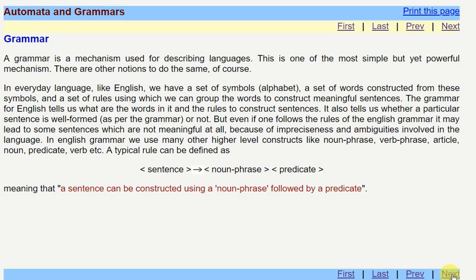There can be constructs like noun phrase, verb phrases, articles, nouns and predicates, verbs for English language. Even if we are building meaningful sentences, we can get many ambiguities which are involved in the language.